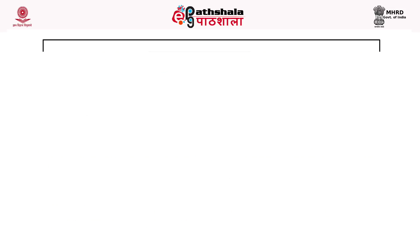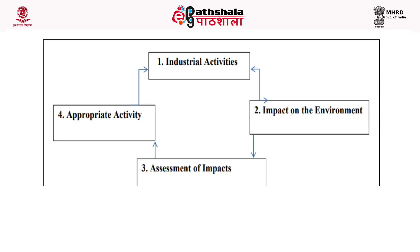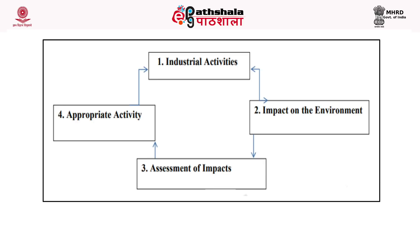In this figure, we have tried to correlate industrial activity and its impact on the environment. First, there is an industrial activity going on. Certainly, there will be certain releases from that industry and those releases will have some impact on the environment. In environmental auditing, the third step is to assess those impacts, and the fourth step involves appropriate activity — meaning how these releases can be controlled or what else can be done.